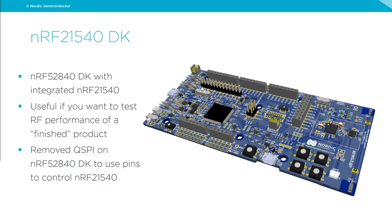The 21540 DK is essentially a 52840 DK with the 21540 integrated. It has the same pinout and functionality as a 52840 DK — when plugged into your PC it shows up as a 52840 DK. It's very useful for testing RF performance of a finished product without any hardware work. One change compared to the 52840 DK is removal of the quad SPI flash, as those pins are needed for controlling the 21540. Code written for the 52840 DK that doesn't use the quad SPI flash will run on the 21540 DK as well.